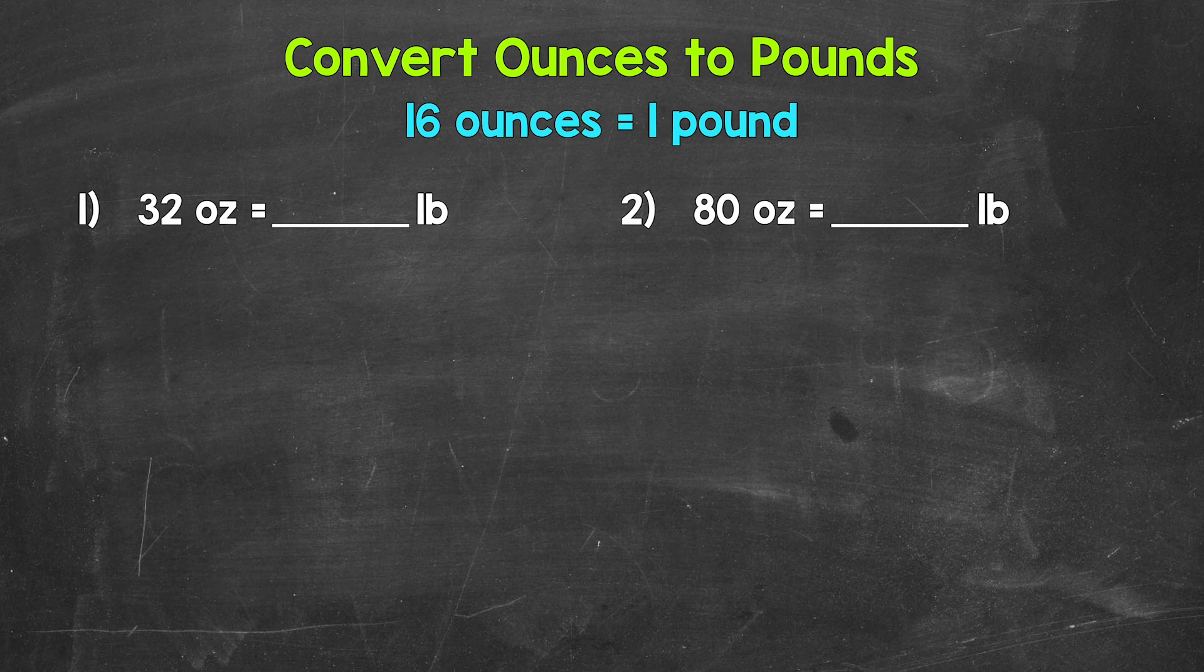Let's jump into our examples, starting with number one where we have 32 ounces equals how many pounds? Well, think about it like this. Each group of 16 ounces equals one pound. So how many groups of 16 in 32?